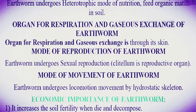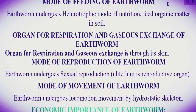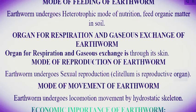Organ for respiration and gaseous exchange of earthworm: gaseous exchange occurs through its skin. Mode of reproduction of earthworm: earthworm undergoes sexual reproduction; the clitellum is the reproductive organ.